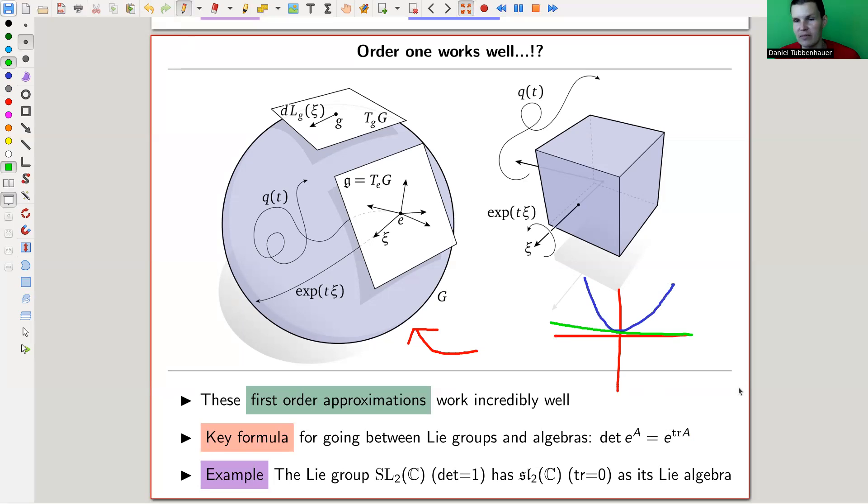The Lie algebra is the first order approximation of those discrete symmetries coming from a Lie group. The key formula relating them: one has a determinant and one has a trace. For example, if you have the Lie group SL2, which is determinant one - two by two matrices with determinant one - its associated Lie algebra is the group of matrices with trace zero. Determinant one turns into trace zero because e to the zero is one. That's essentially what happens.